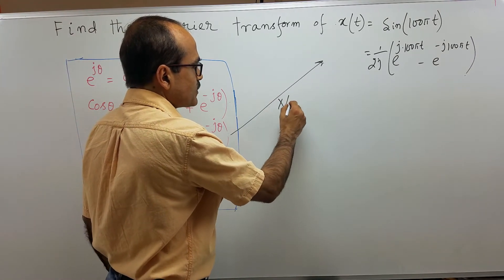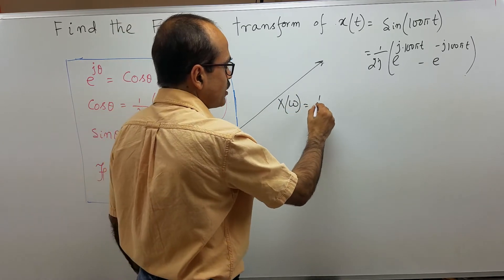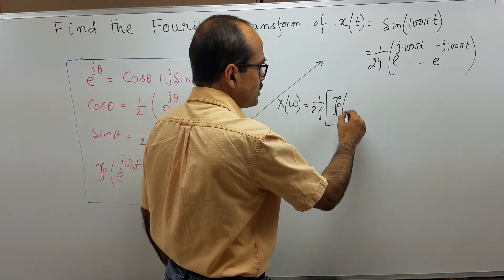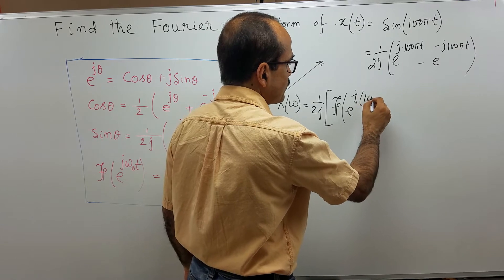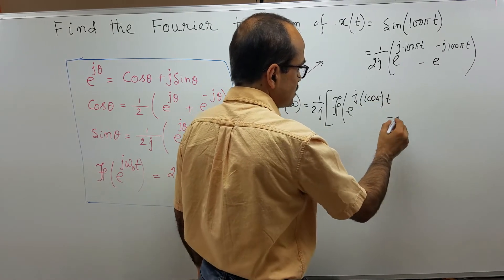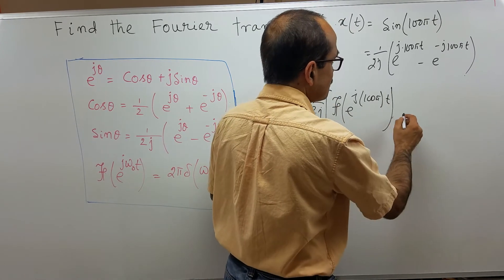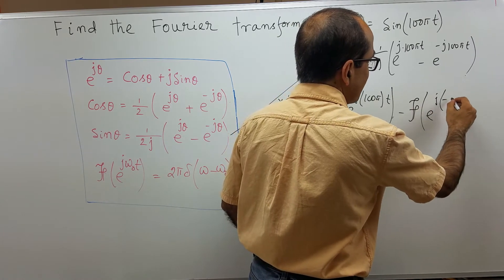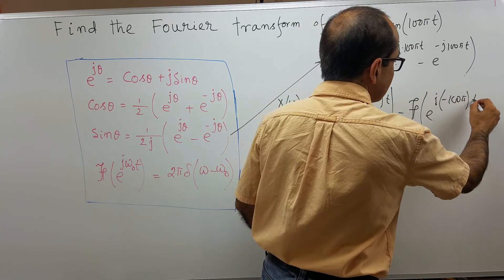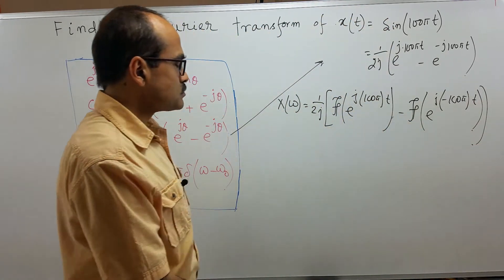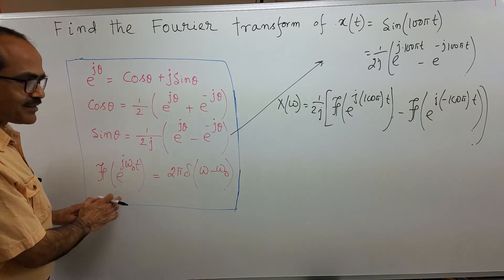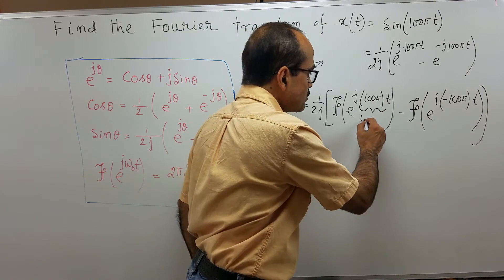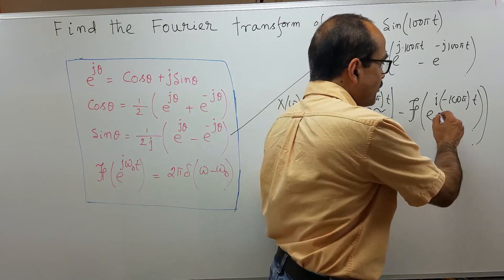So, we get X(ω) equal to 1 over 2j times the Fourier transform of e to the power j·100πt, minus the Fourier transform of e to the power minus j·100πt. We make use of this result. Here, ω₀ in the first case is 100π, and ω₀ in the second case is minus 100π.